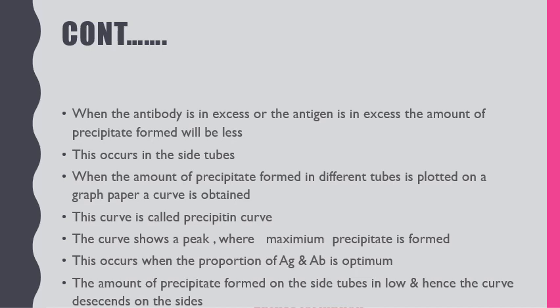When the antibody is in excess or the antigen is in excess, the amount of precipitate formed will be less — this occurs in the side tubes. When the amount of precipitate formed in different tubes is plotted on a graph, a curve is obtained. This curve is called the precipitin curve. The curve shows a peak where maximum precipitate is formed, which occurs when the proportion of antigen and antibody is at optimum. The amount of precipitate formed in the side tubes is low, and the curve descends on the sides. The center tube contains equal amounts of antigen and antibody, where precipitation is highest.